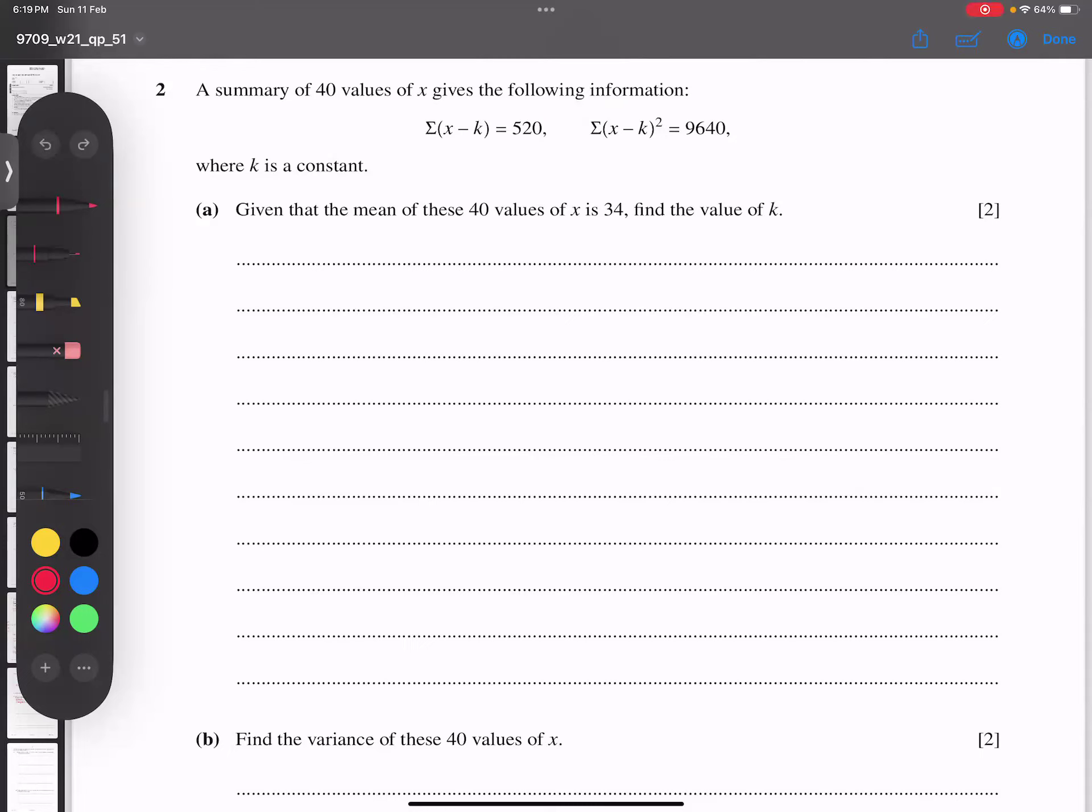The question asks about the mean. The mean of 40 values is 34, so the mean is given. Let's start with the mean formula. The basic formula is sigma x minus a over n plus a. This number is always the same, but in this particular question they use k.